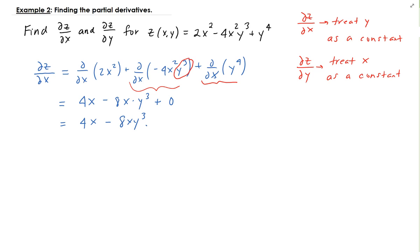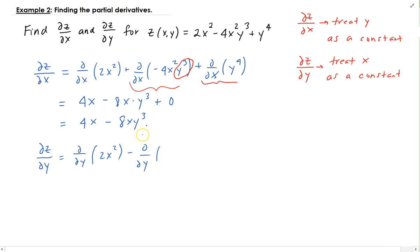Now let's apply the same idea for finding the partial of Z with respect to Y. We have the partial of 2X squared with respect to Y, minus the partial of 4X squared times Y cubed with respect to Y, and then taking the partial of Y to the fourth with respect to Y. Since there's no Y in 2X squared, taking its partial with respect to Y gives us zero.